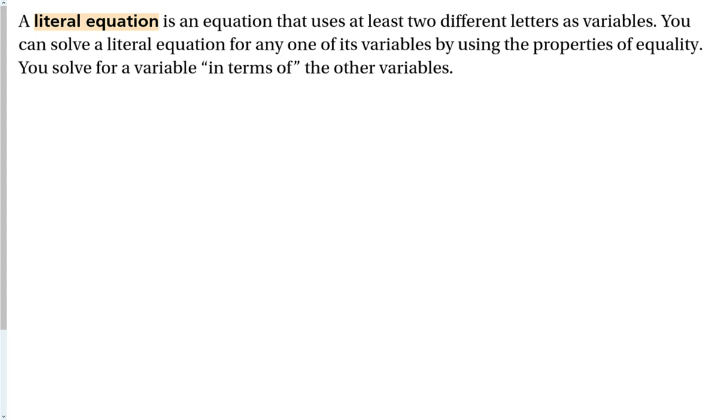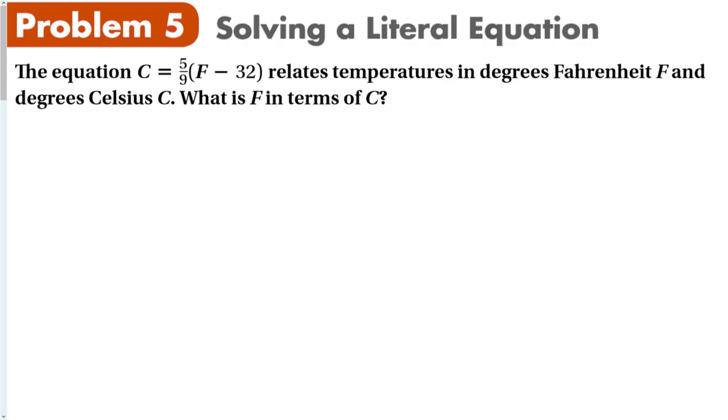The next thing, last type of problem here, is called a literal equation. A literal equation is an equation that uses at least two different letters as variables. You can solve a literal equation for any one of its variables by using the properties of equality. You can solve for a variable in terms of the other variable. With literal equations, you are rearranging the expression. You are not going to get an answer because you can only solve for one variable in an equation. If you have two variables, you need two separate equations to solve that, and that is what we'll study in chapter 3. But for literal equations, we can rearrange the terms so that a different one is by itself.